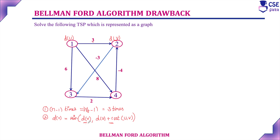This is the Bellman-Ford algorithm we have already discussed with examples — links are provided in the description. Now using the simple approach, we will solve this Bellman-Ford algorithm. In the simple approach, first we have to order the edges according to their direction — that is, 1 to 2. How many edges are there? According to their direction, we have to order the edges.